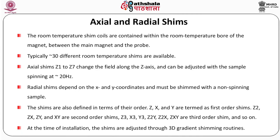There are axial and radial shims. The room temperature shim coils are contained within the room temperature bore of the magnet between the main magnet and the probe. Typically 30 different room temperature shims are available. Axial shims Z1 to Z7 change the field along the Z axis and can be adjusted with the sample spinning at approximately 20 hertz. Radial shims depend on the X and Y coordinates and must be shimmed with a non-spinning sample. Shims are defined by order: Z, X and Y are first order; Z-square, ZX, ZY and XY are second order; and Z3, X3, Y3, Z2Y, Z2X, ZXY and so on are third order shims. At the time of installation, shims are adjusted through 3D gradient shimming routines.